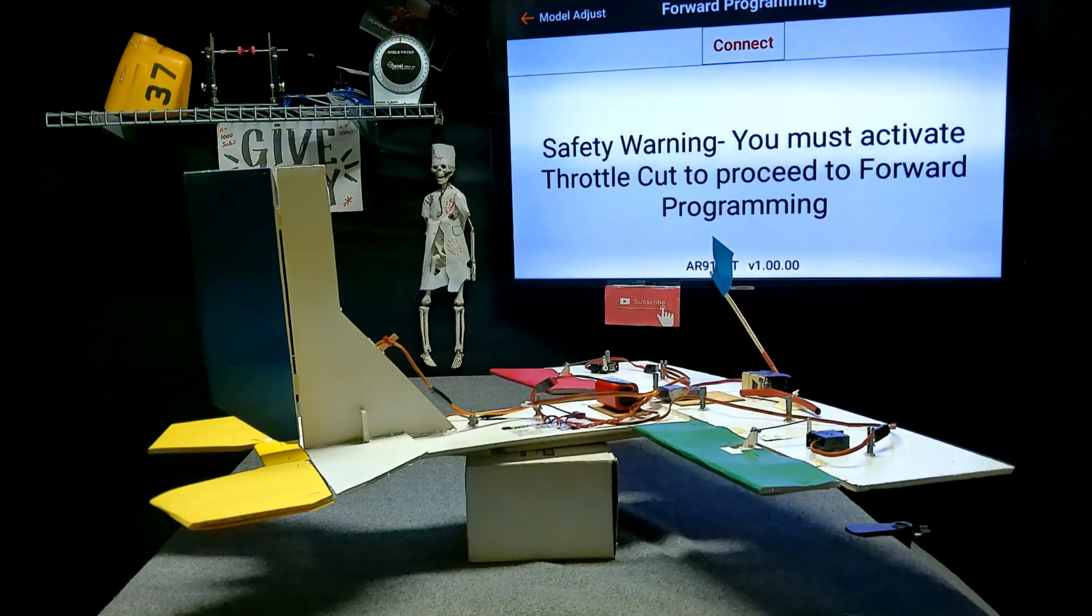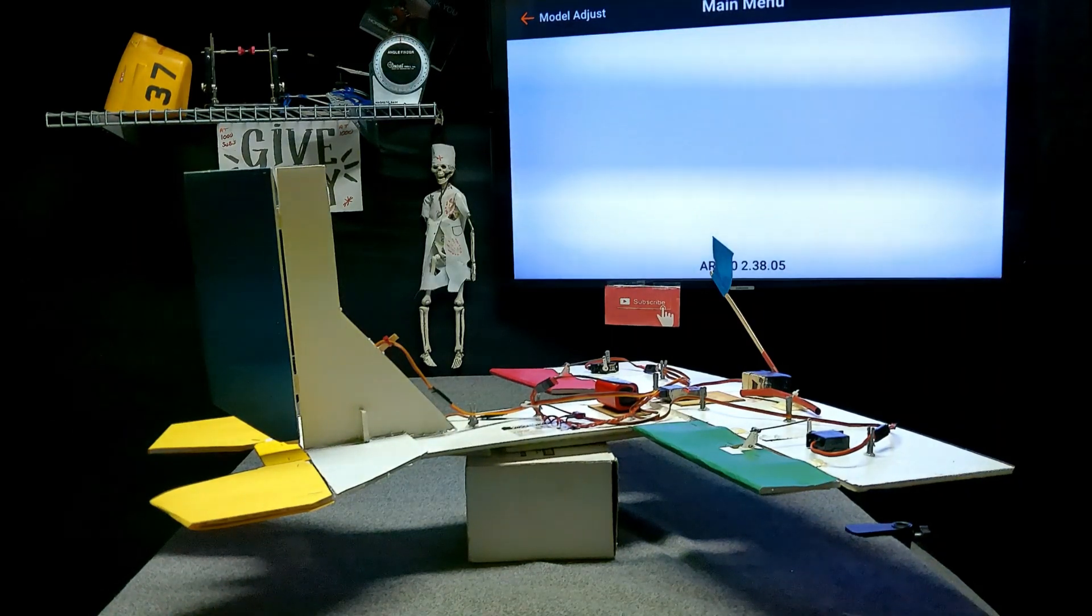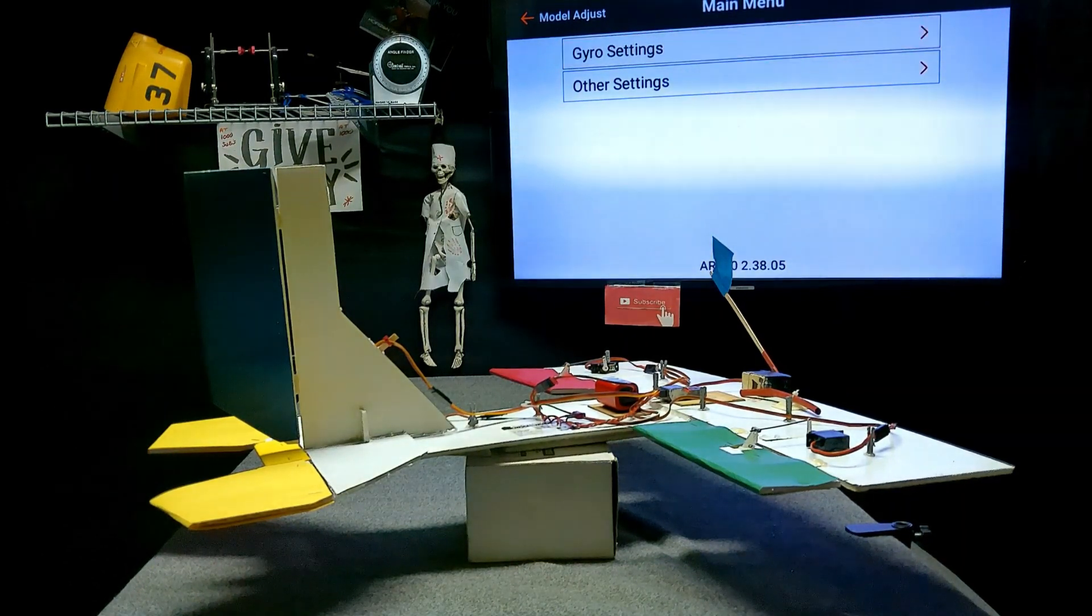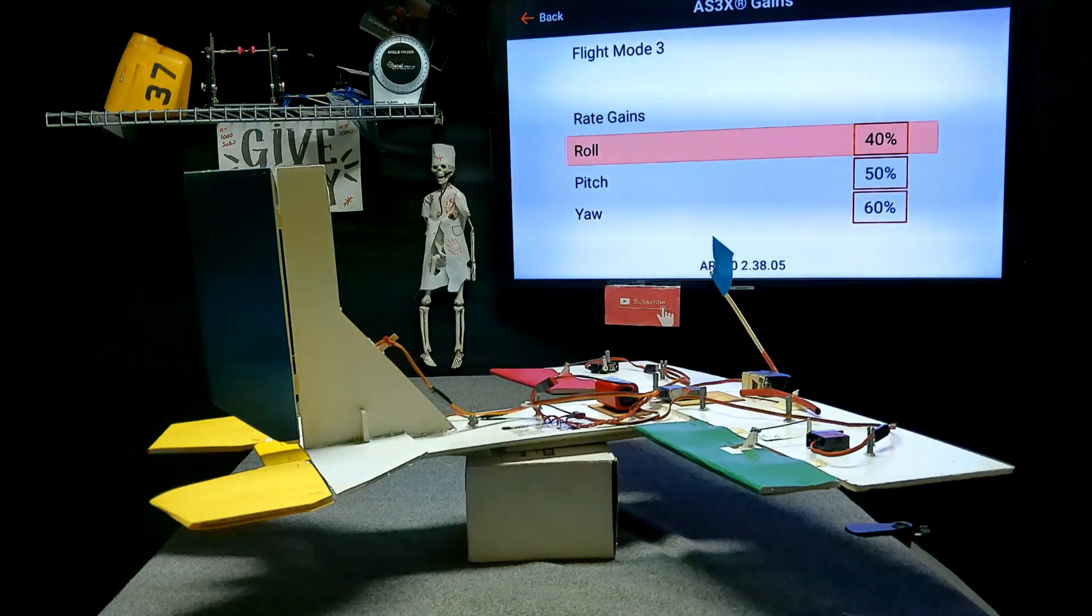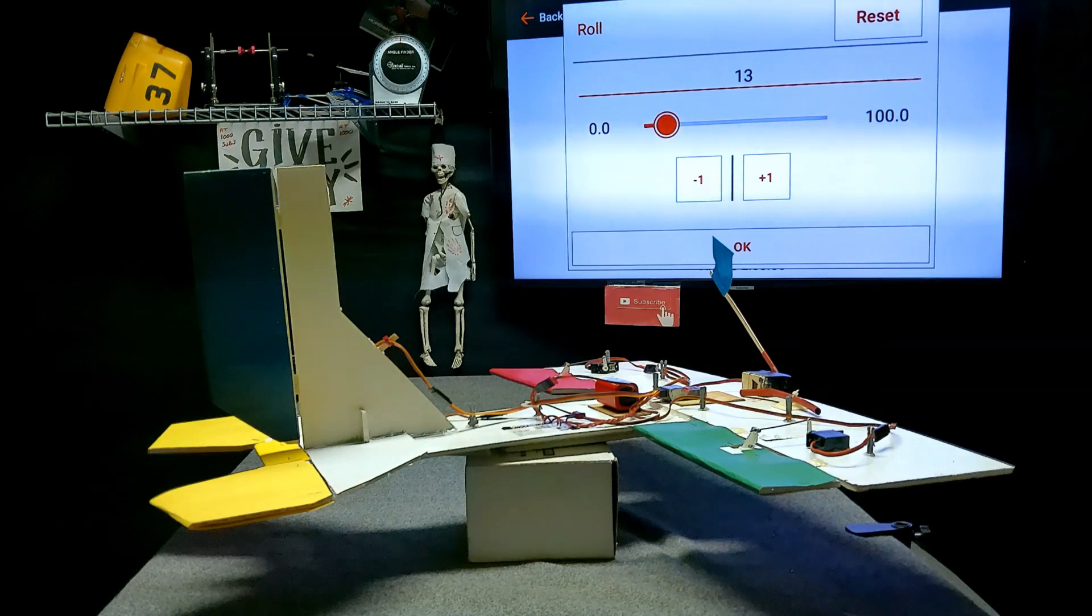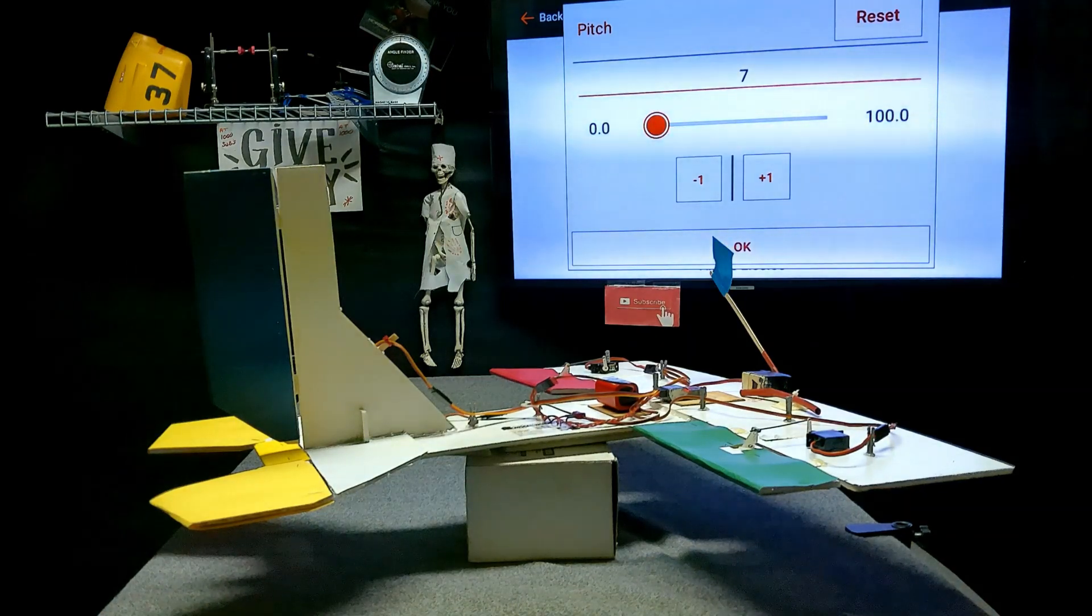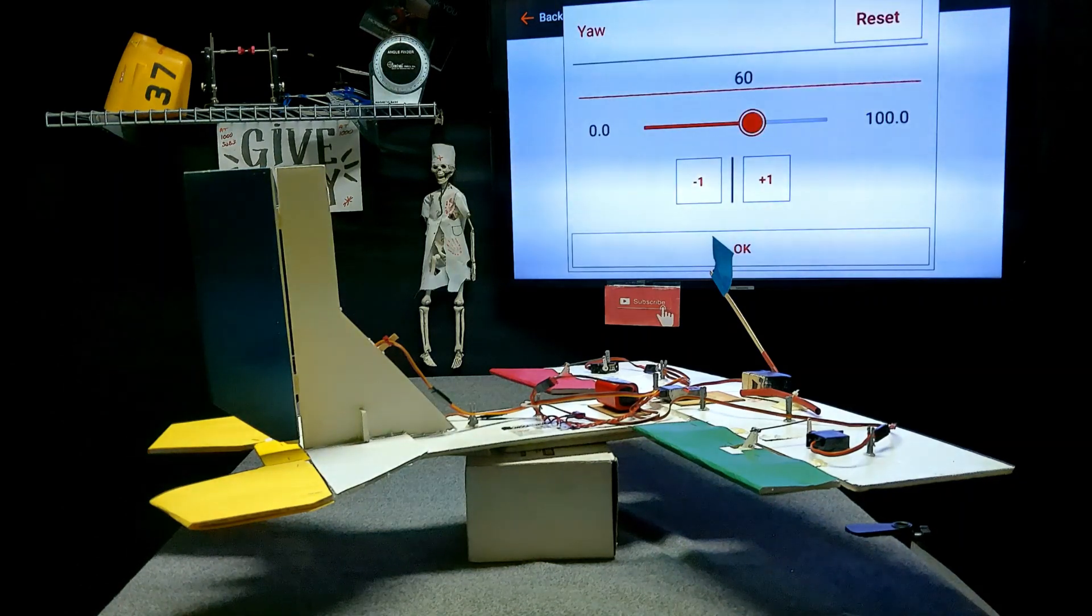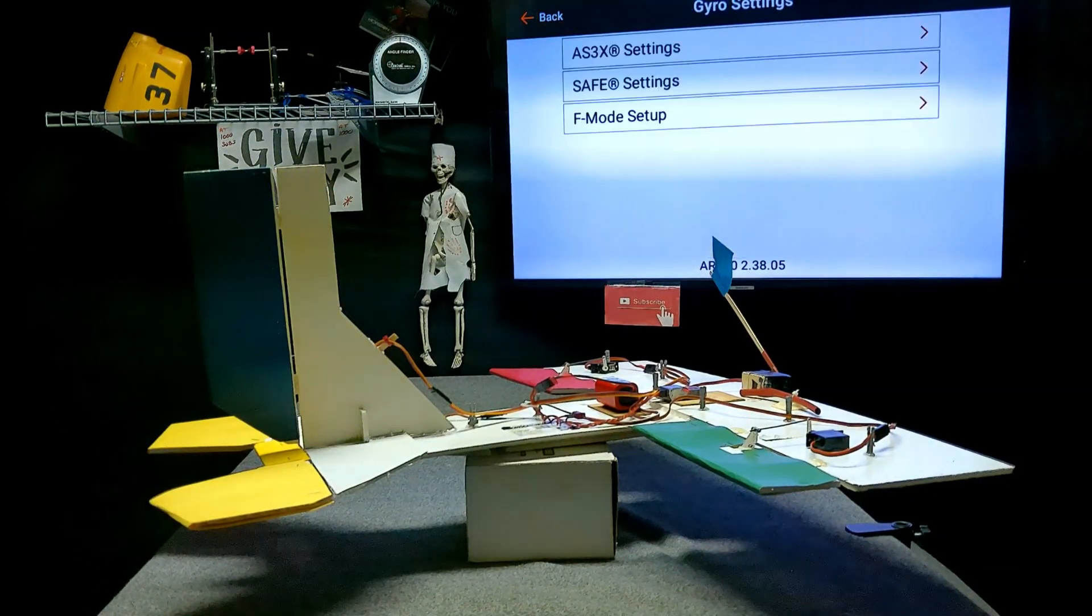If you're flying and a gust of wind—you see the ailerons move? Those are really high gains. So let's change the gains. We're going to go back to forward programming and change the gains to a really low setting. We'll take that 40 and bring it down to 13. The pitch—that tail was going crazy—let's take it down to 13 also. And then the yaw, which is the rudder. We really didn't mess with the rudder, but we've lowered them drastically. Let's back out so we can see it in action.